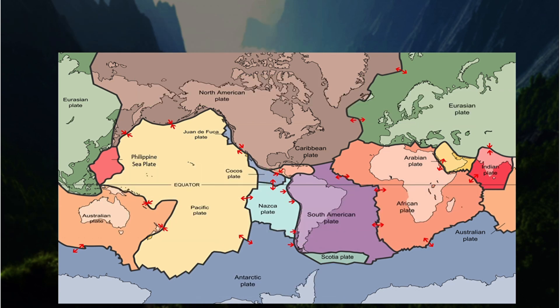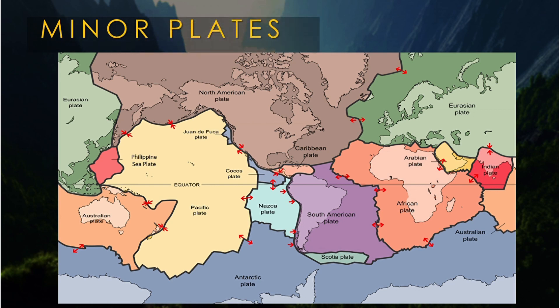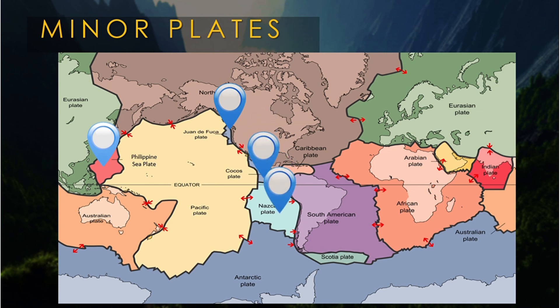Here are some of the minor plates, which have an area of less than 20 million square kilometers: the Philippine Sea Plate, Juan de Fuca Plate, Cocos Plate, Nazca Plate, Caribbean Plate, and Scotia Plate.